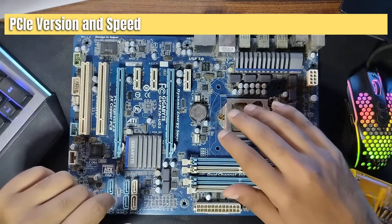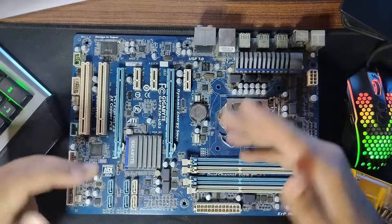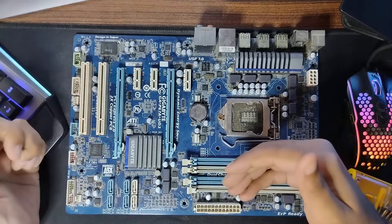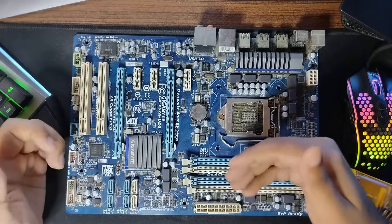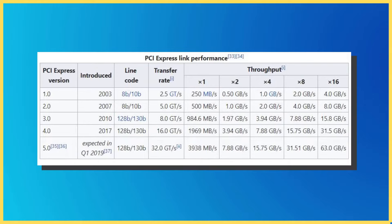It should also be mentioned that the version of the PCI interface matters a ton. Basically, a single PCI lane doubles its transfer speed with each newer version. Have a look at this table. You can see that the X1 slot conforming to version 3.0 has a bandwidth of about 1 GB per second. The same slot conforming to version 4.0 would have a bandwidth of double the amount, or 2 GB per second, and it scales with the number of PCI lanes a slot offers. For instance, an X16 version 3.0 slot has a bandwidth of about 16 GB per second, and the same slot conforming to version 4.0 would have a bandwidth of about 32 GB per second.